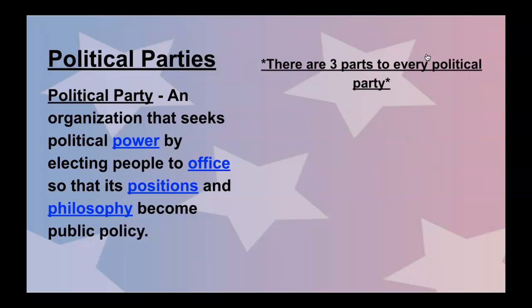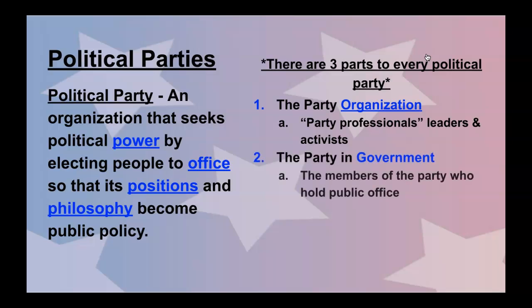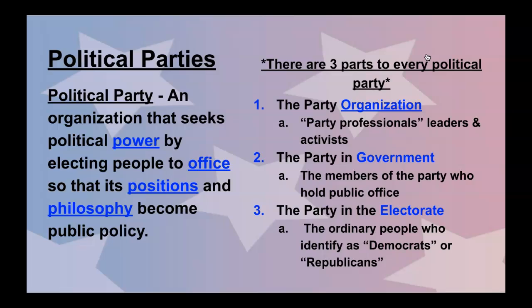When you dig a little bit deeper, there are three parts to every political party that make it function at all levels of government. There's the party organization, which is basically the party professionals — the leaders and activists. Then there's the party in government, which refers to the members of the party who are actually holding public office. And then there are the party in the electorate — that's ordinary people who identify as either Democrats or Republicans. Political parties serve different functions and roles at all different tiers of government, much like federalism with its division of tiers.